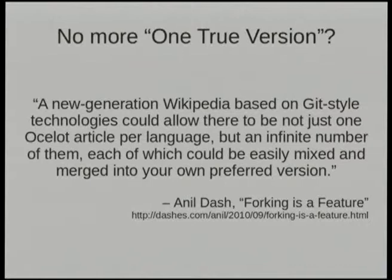But I don't think that model would work particularly well when it comes to encyclopedia articles — they're going to be a little bit longer than Q&As or dictionary definitions. This canonical reliable version I see as being a feature for the user rather than the contributor, and the contributor and the user have sometimes competing needs. Anil Dash says it could be based on Git-style technologies and there could be not just one article per language but an infinite number of them, each of which could be easily mixed and merged into your own preferred version. My response to that is: how do you know what your preferred version is? How is the average user going to evaluate dozens or hundreds of branches and somehow know how to mix them? I think there are a few problems with this idea.